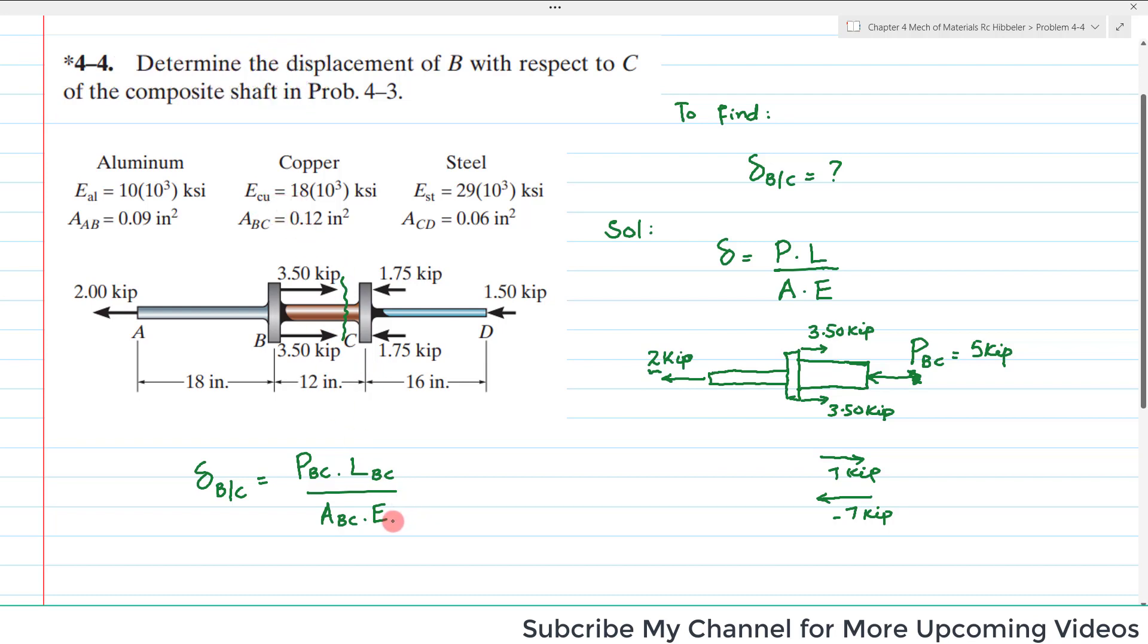For copper, so E_copper. P_BC is equal to minus 5 because this is in negative direction, so it will be minus 5 times 12 inches divided by area of BC which is equal to 0.12 square inches, and E of copper is equal to, since this portion is copper, we will take E as 18 times 10 to the power 3.